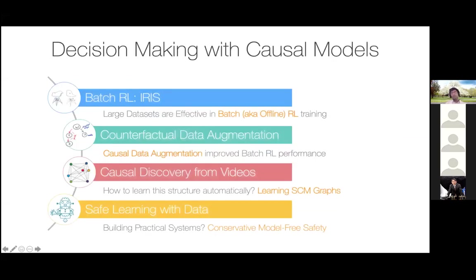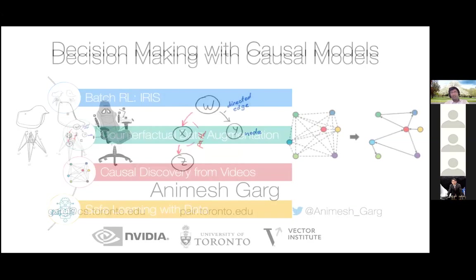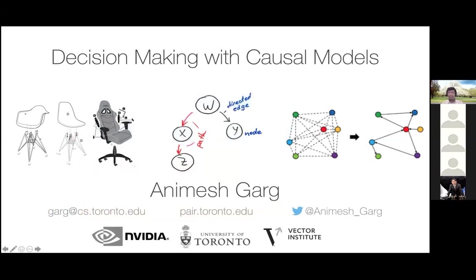Putting all of these ideas together — learning from data, improving performance on that dataset, learning causality, and doing so in a provably safe manner — the big picture takeaway is that building causal models and discovering causal structure enables us to build much more efficient and generalizable algorithms. Studying safety in the context of these generalizable algorithms allows us to build practical robot systems, which would be the kind we would like to deploy in space. Thank you.